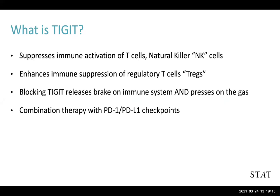Blocking TIGIT not only releases the brake on the immune system — like what PD-1 and PD-L1 inhibitors do — but it also presses on the gas, stimulating T-cells and natural killer cells. That's where TIGIT is a little bit different from PD-1/PD-L1 checkpoint inhibitors. Where it's being pursued now, there's not a lot of data to suggest that TIGIT monotherapy has activity against tumor cells, but what we've seen is that combination therapy — taking a TIGIT inhibitor and combining it with a PD-1 or PD-L1 checkpoint inhibitor — is where we're seeing some really intriguing data.